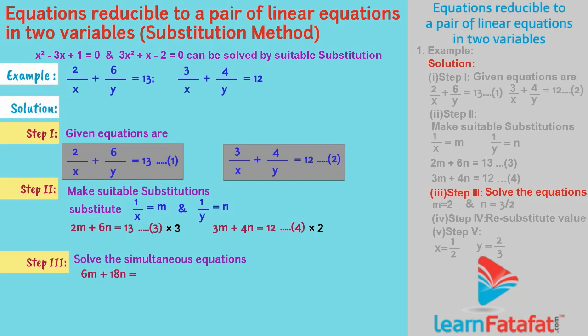6m plus 18n is equal to 39. 6m plus 8n is equal to 24.